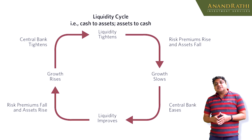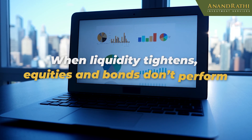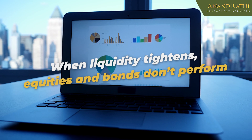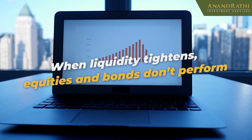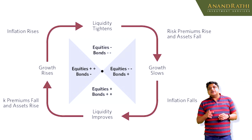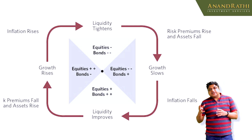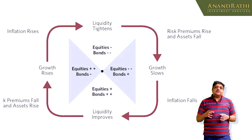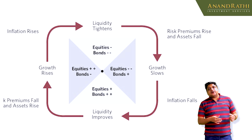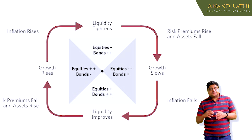You will see a chart of this full cycle explained in this video. When liquidity tightens, equities and bonds don't perform — it is negative in that cycle. When growth slows, it is negative for equities but positive for bonds because interest rates start to rise. When liquidity improves and inflation falls, it is positive for both equities and bonds as we are at the front end of the cycle. When growth rises, it is highly positive for equities, and from here onwards bonds start to underperform equities. So this is how all four stages of this cycle operate.